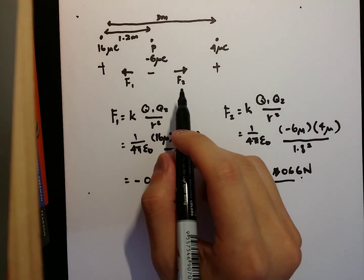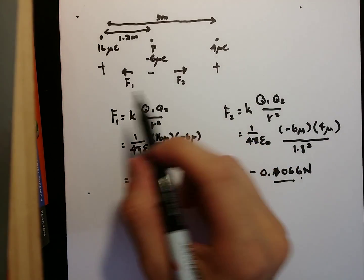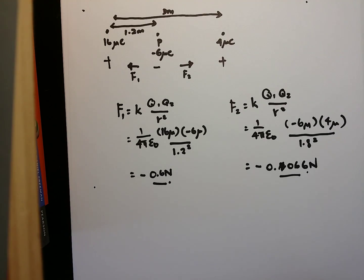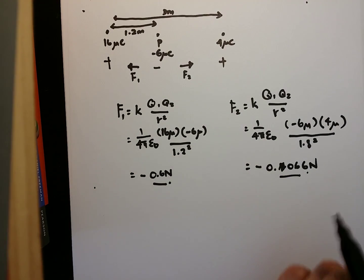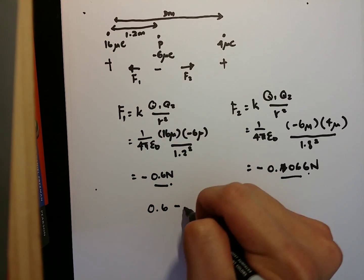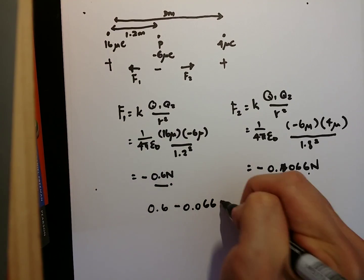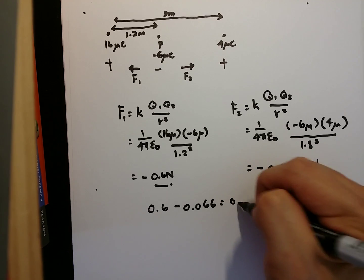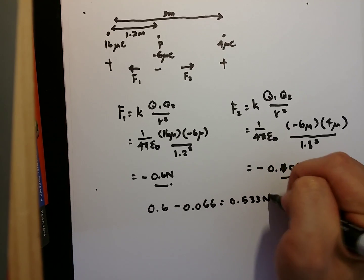Now, once I know my F1 and F2, since they are of opposite directions, what I will do next is I will subtract. To find the net force, I will take 0.6 minus 0.066 to give me 0.533 newton.